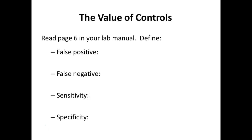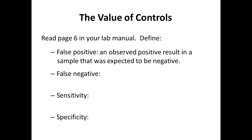By definition, a false positive is when your control has a positive result but you expected a negative result. In the case of our plates for today's experiment, we expect no growth — it's a problem if we get growth. The best example that most people understand pretty well is pregnancy testing, so that's what I'll use today.